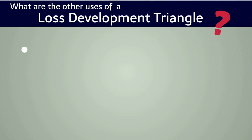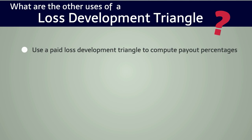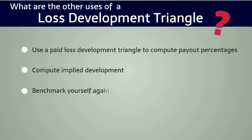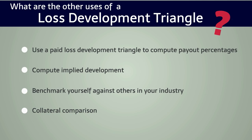There are several ways you can use a loss development triangle. You can use a paid loss development triangle to compute payout percentages. You can compute implied development. You can benchmark yourself or the company being analyzed against others in their industry. You can also do a collateral comparison — if an insurance company has provided the collateral requirement for a particular policy period, you can use the loss development factor from the triangle to determine the estimated ultimate incurred losses and compare that to the collateral requirement.